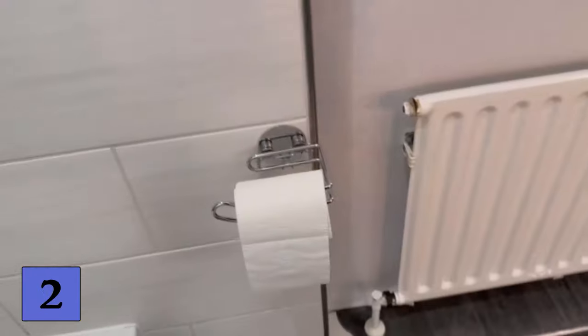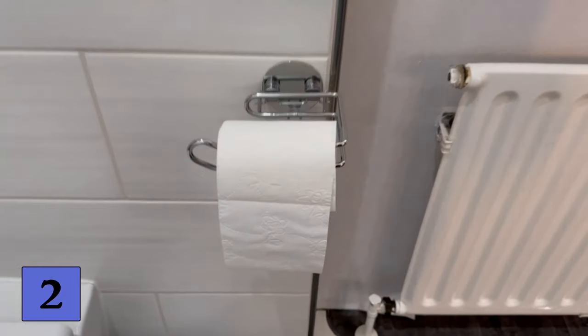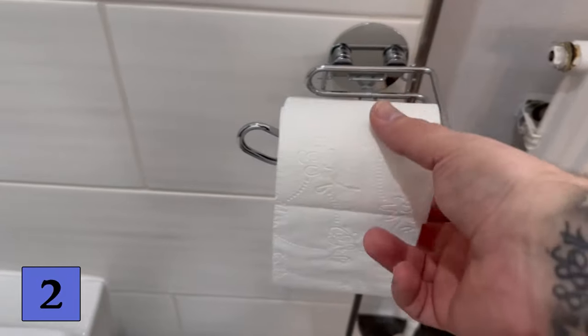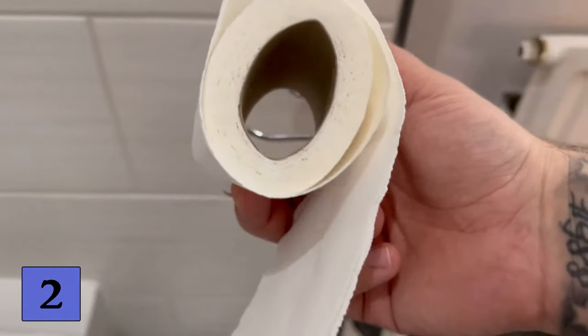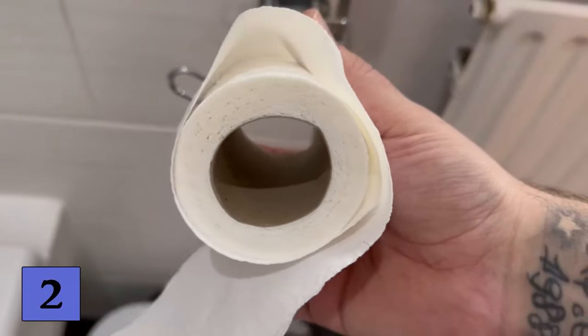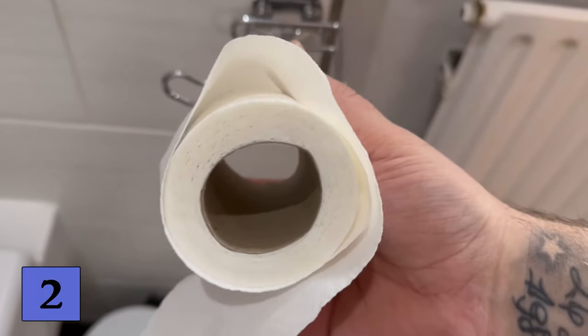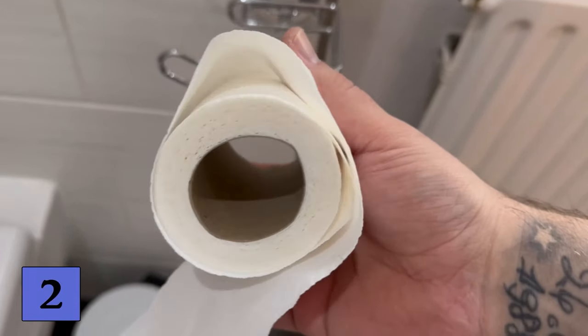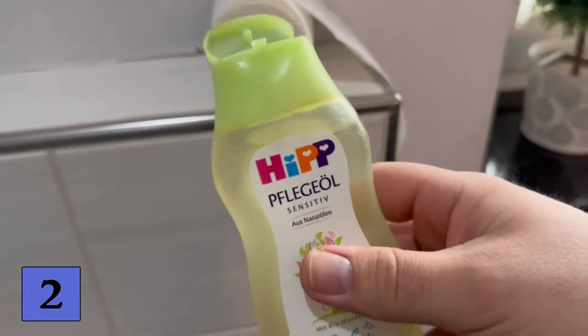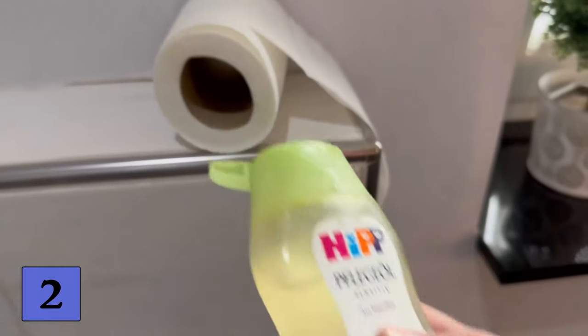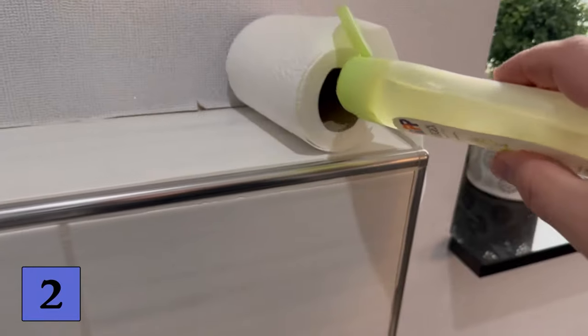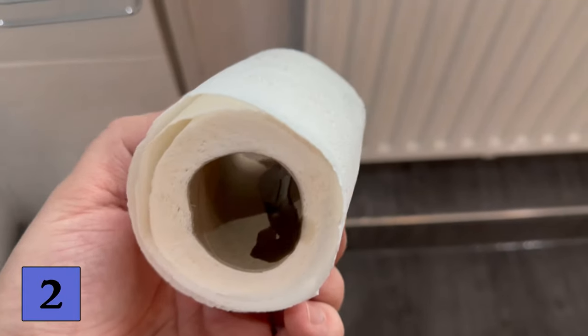And then we come to our second trick. You can also use baby oil in the bathroom, namely in your toilet roll. Because baby oil has a very nice smell, you can make your bathroom smell much nicer with the help of your toilet roll. You take the toilet roll off the holder and make sure that you put a little bit of the baby oil into this piece of cardboard or into the inner cardboard of the toilet paper.